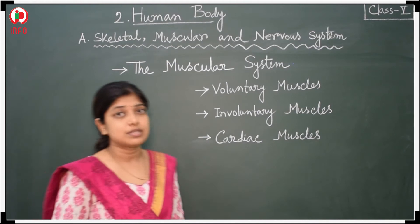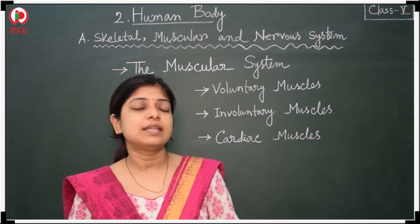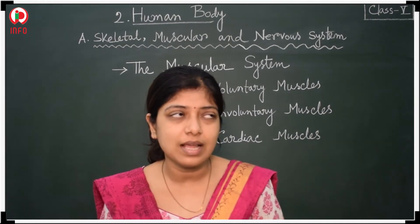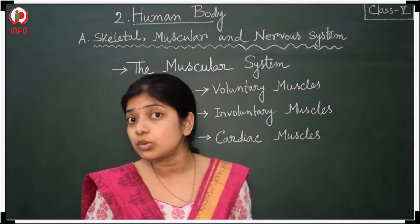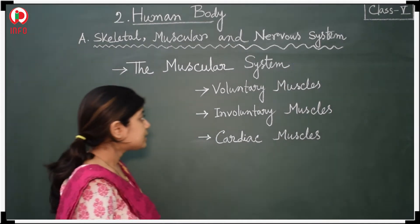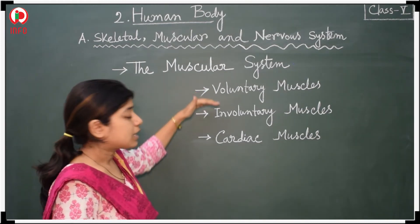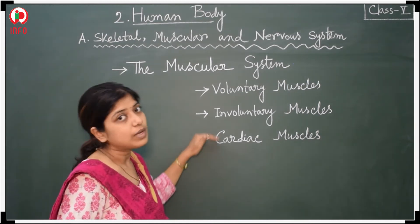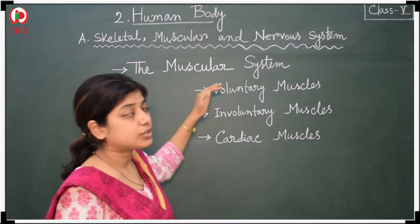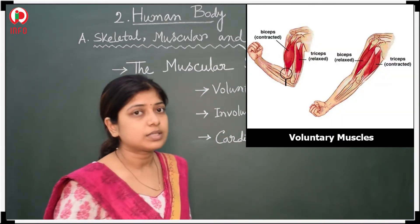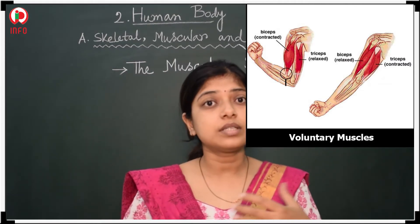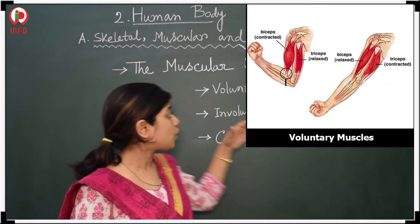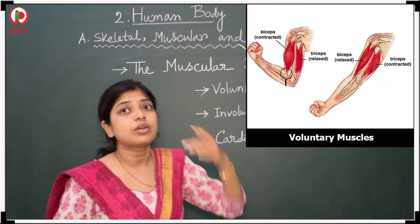Now let us have a look at the muscular system. The muscular system consists of different muscles. Muscles are the soft tissues of our body. They are divided into three parts: voluntary muscles, involuntary muscles, and cardiac muscles. Cardiac muscle is also one kind of involuntary muscle. Voluntary muscles are those whose control is in your hands — you can control them by your own will.